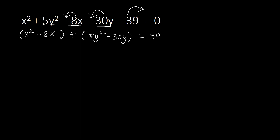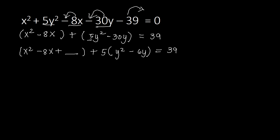Now we take out the numbers beside the squared variables. For the y group, we have 5 beside y squared, so we factor out 5: 5y squared divided by 5 is y squared, and minus 30y divided by 5 is minus 6y. For the x group, there is no visible coefficient beside x squared, so we do not take out any number and simply add something to make it a perfect square trinomial. On the right side, 39, we will be adding the numbers we add to each group.